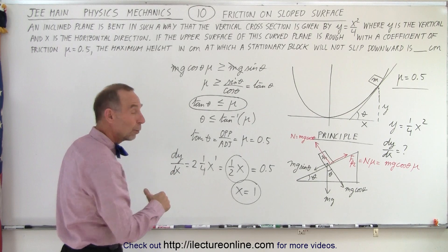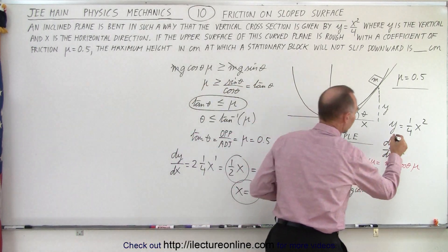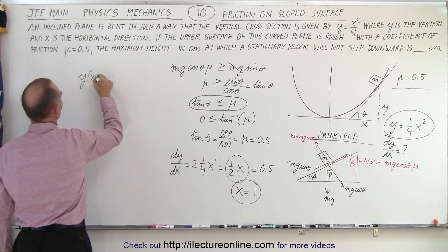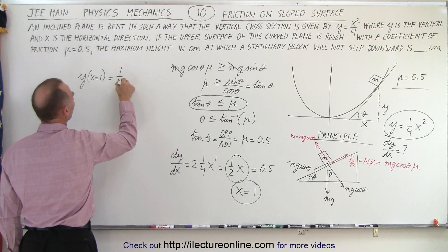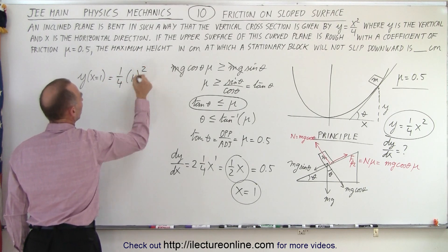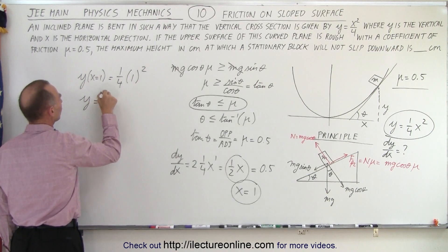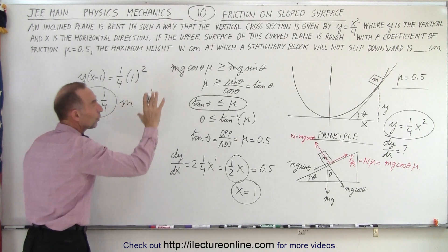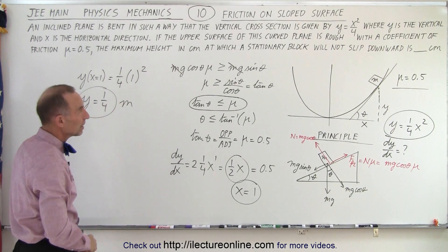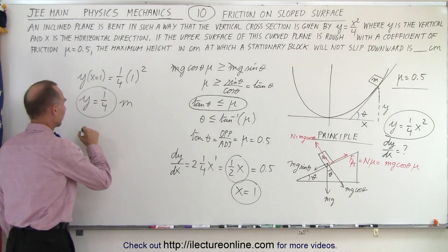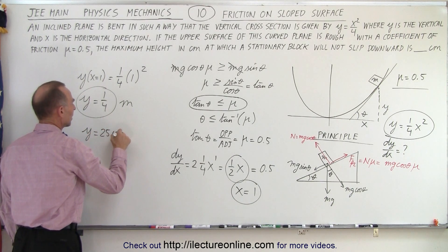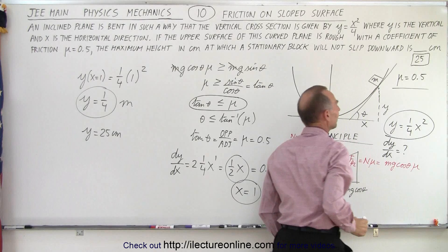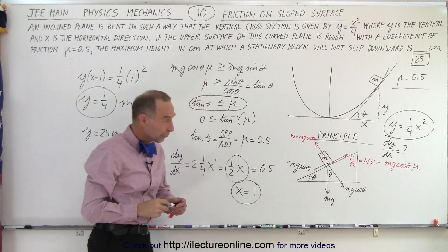If x equals one, what is the value for y? So now we go back to the original equation right here and we say that y, when x is equal to 1, is equal to 1 over 4, 1 squared, and of course then y equals 1 over 4 when x equals 1. And of course this is in meters because we use standard units of meters. So when we convert that to centimeters, therefore y equals 25 centimeters, and so the answer here would be 25 centimeters. And that's the answer they're looking for.